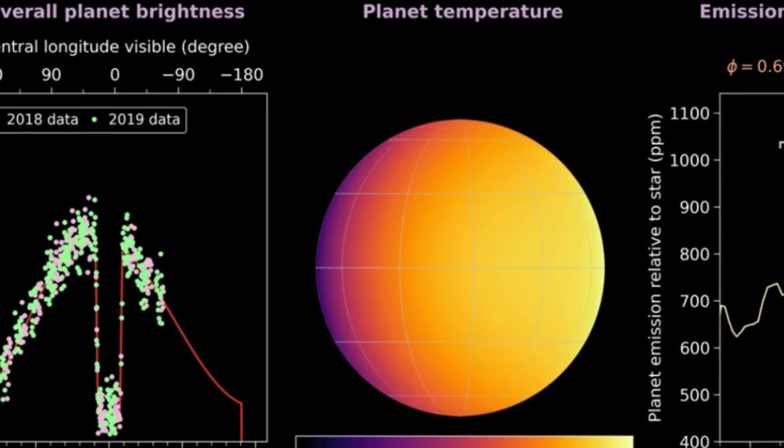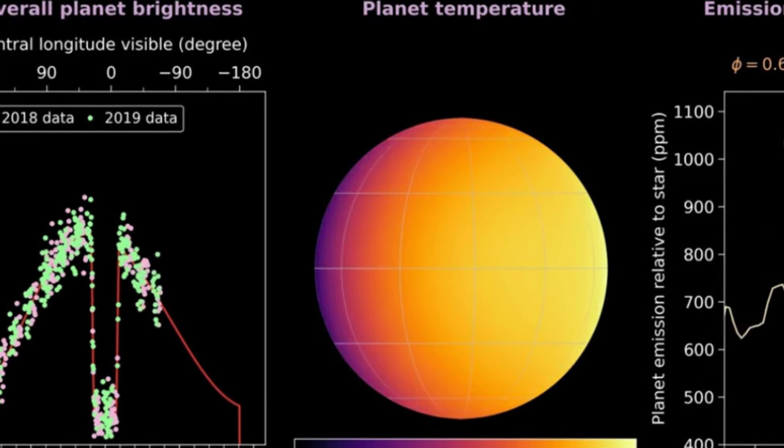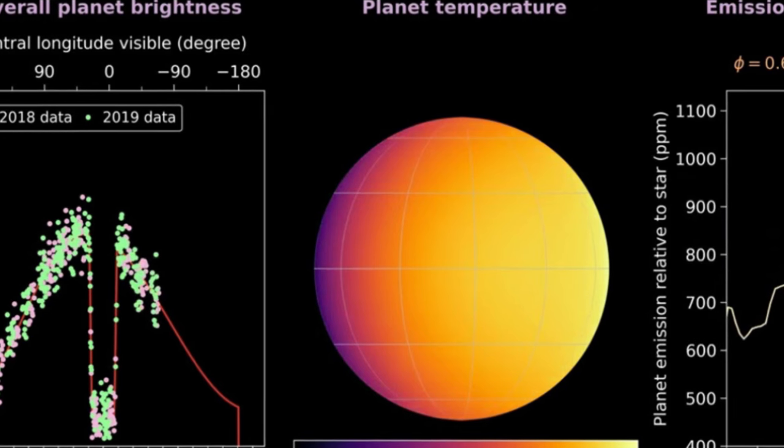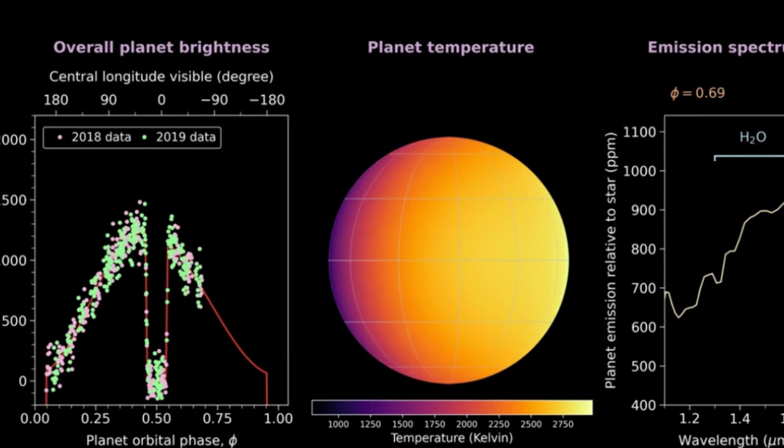Although it could be raining precious gems on Neptune and Uranus too, in either case, we have no hope of harvesting them, but WASP-121b shows us what fascinating variety can exist in the different types of worlds out there.